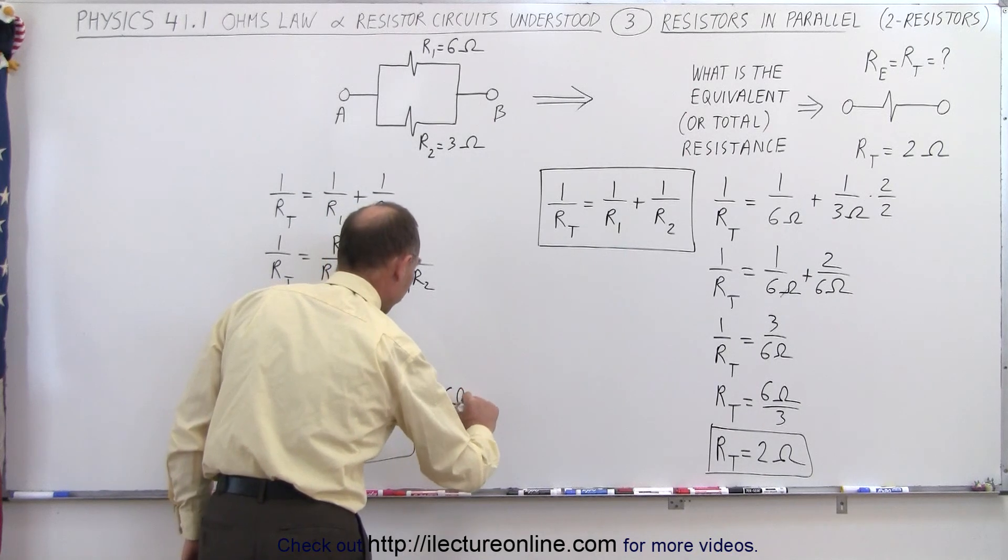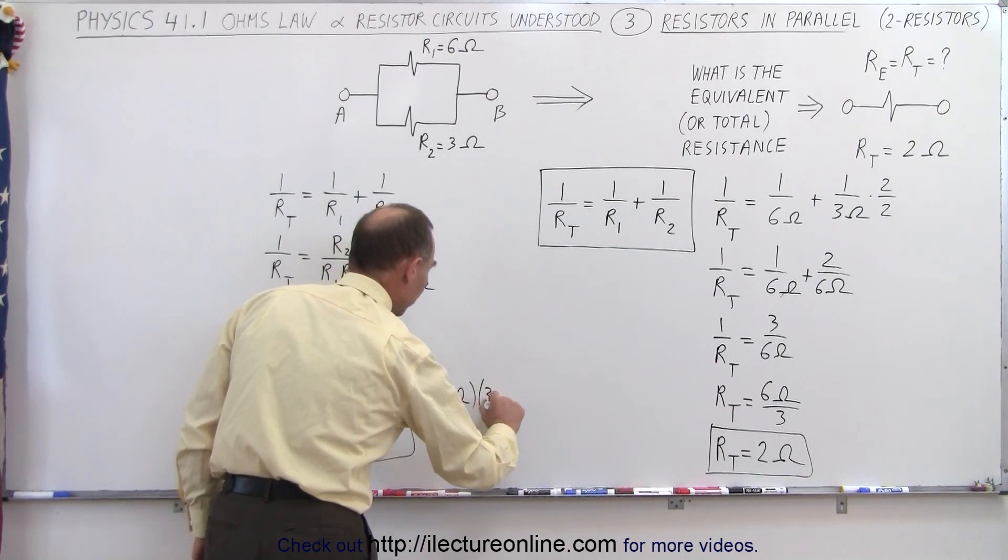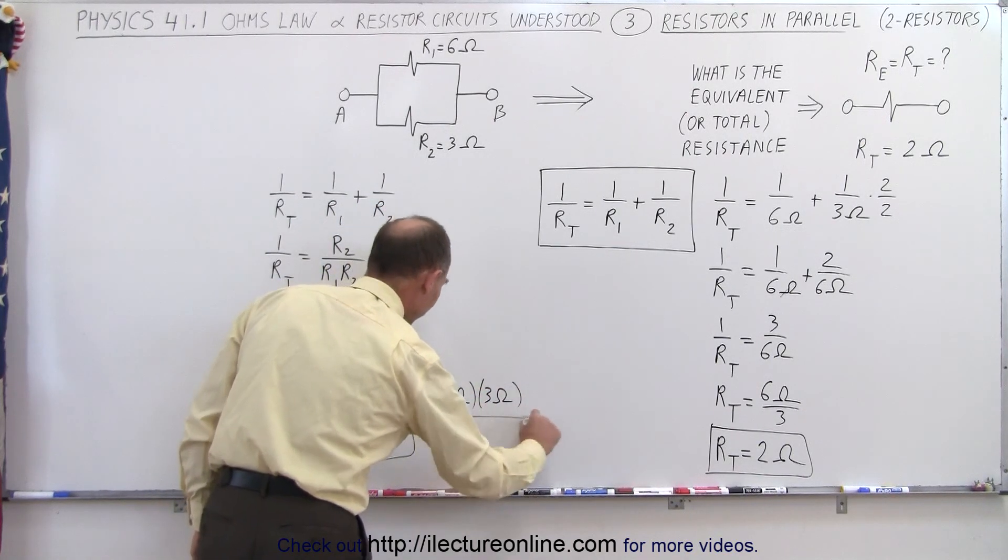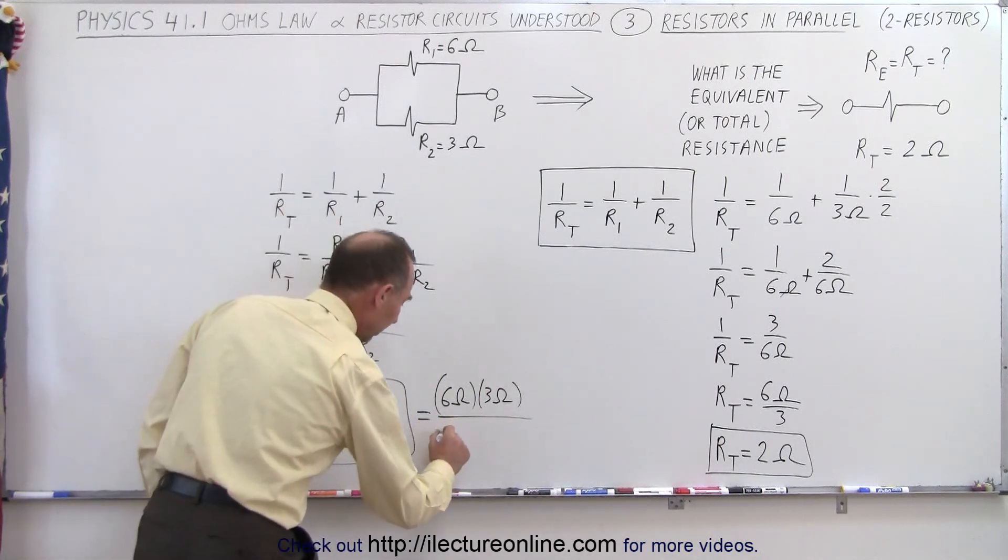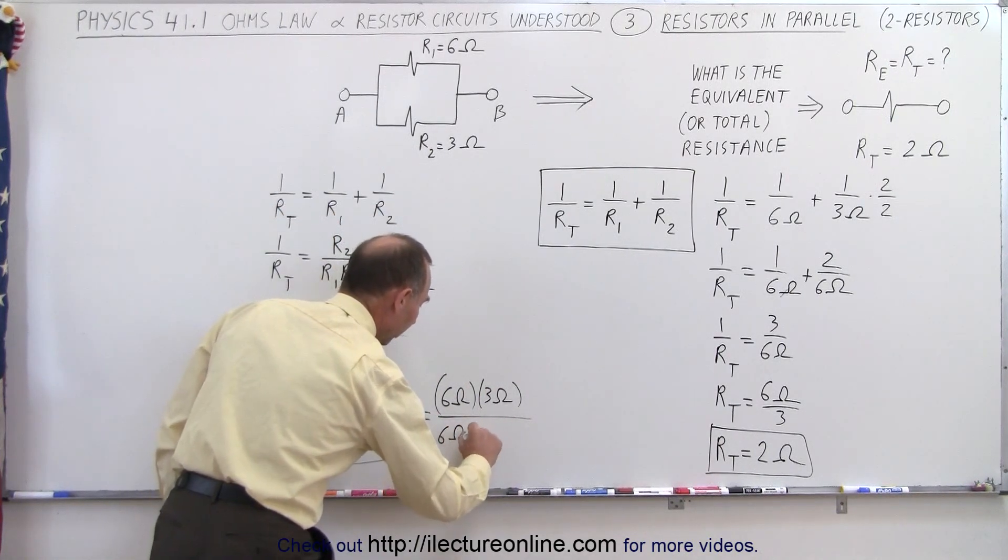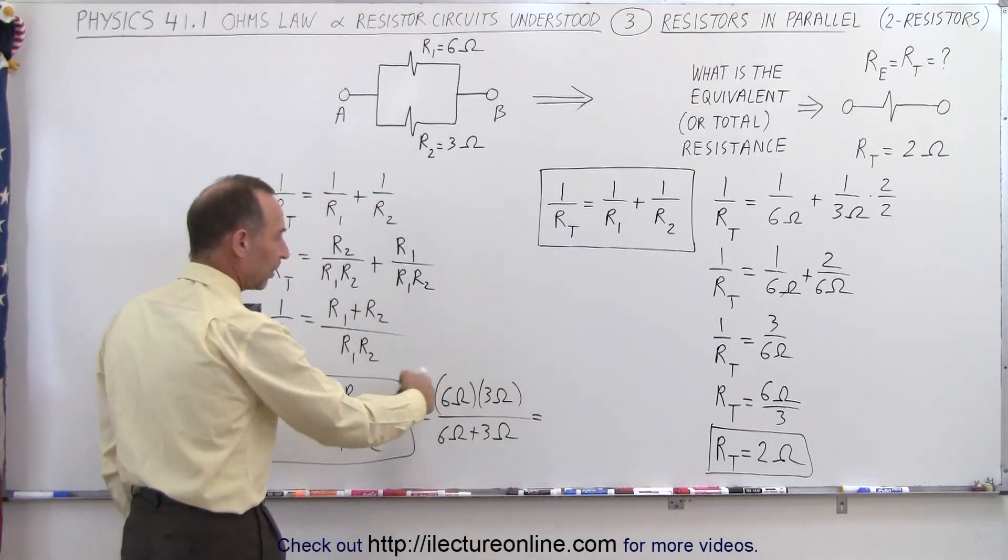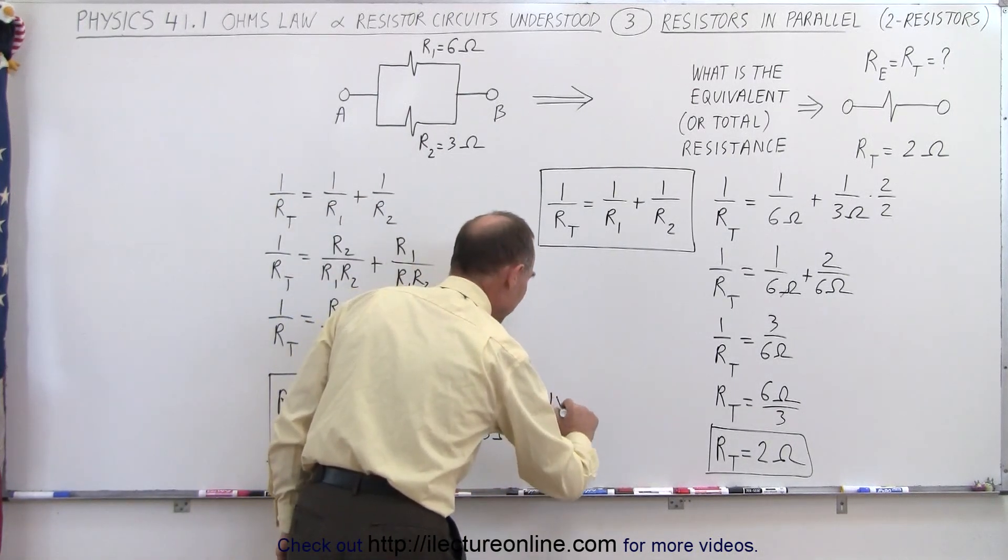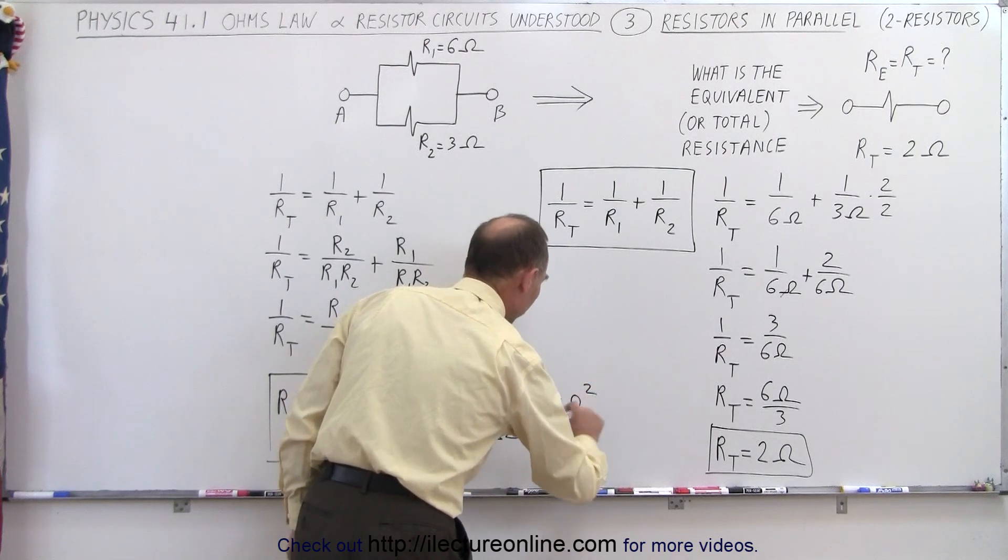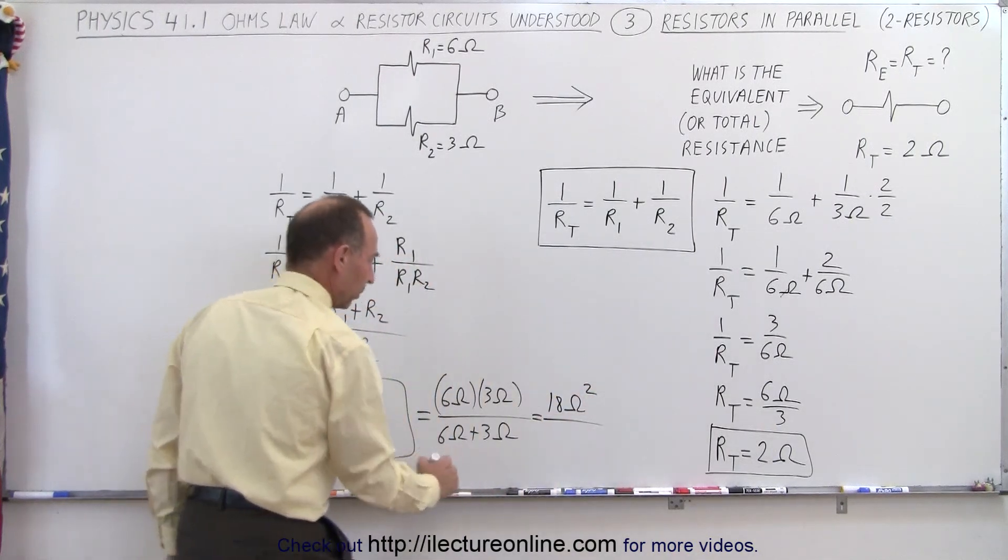So that would be 6 ohms times 3 ohms in the numerator, divided by, in the denominator, where we get 6 ohms plus 3 ohms. So the units will work out again, because in the numerator we get 18 ohms squared, divided by the denominator, 6 plus 3, which is 9 ohms.